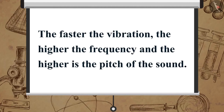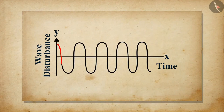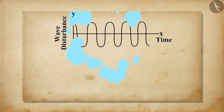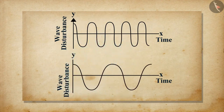The faster the vibration, the higher the frequency, and the higher is the pitch of the sound. Therefore, a high-pitched sound corresponds to more number of compressions and rarefactions passing through a fixed point per unit time. Objects of different sizes and conditions vibrate at different frequencies to produce sounds of different pitches.